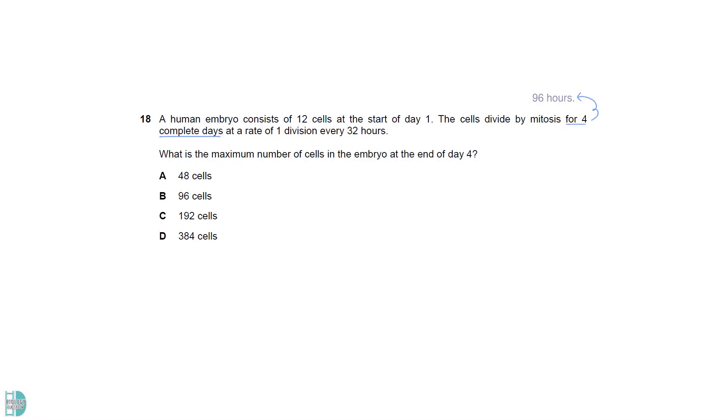There are 96 hours in 4 days. If the cell division takes 32 hours, the cell would divide 3 times in the period. So 12 cells would become 96 after 3 divisions.